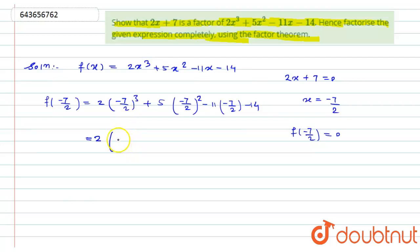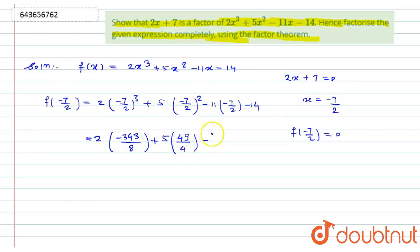The cube of −7 is −343, divided by 2³ = 8, giving 2·(−343/8). The square of −7/2 is 49/4, so 5·(49/4) = 245/4. Multiplying −11 by −7/2 gives +77/2, and the constant is −14.